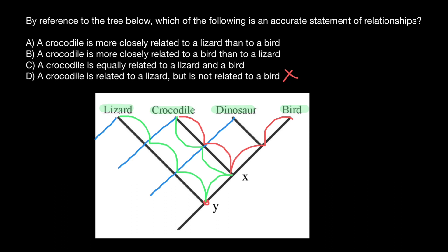Now you can visually see that the crocodile is much more closely related to a bird than to a lizard. Hence our answer is B: a crocodile is more closely related to a bird than to a lizard. That's all for today — subscribe and see you in the next video. Goodbye.